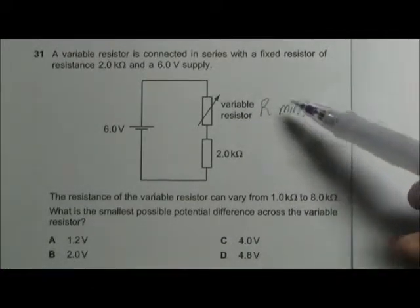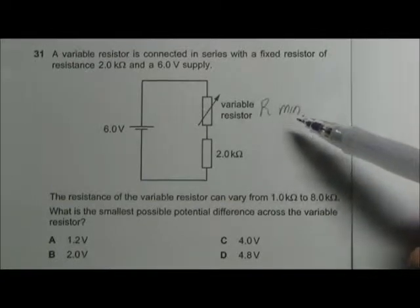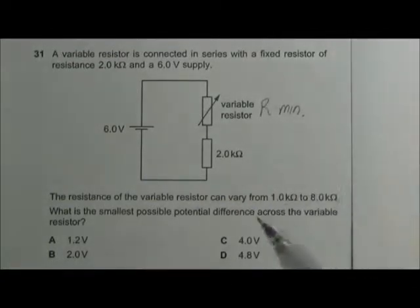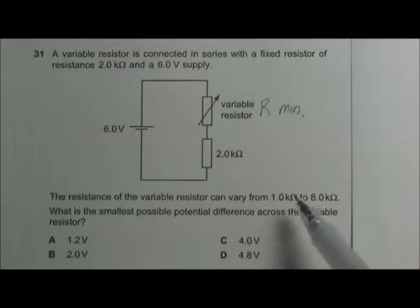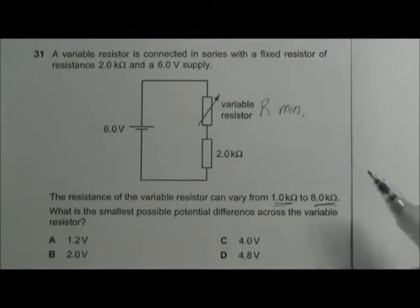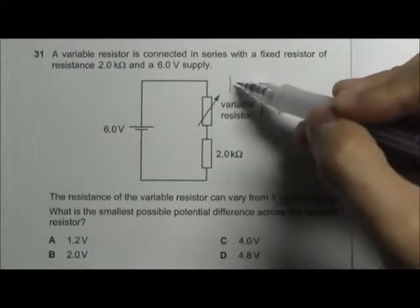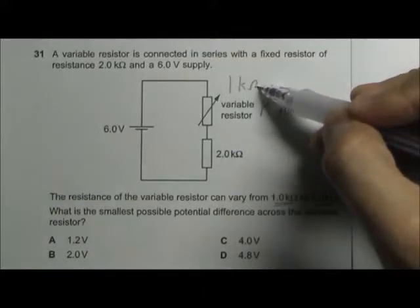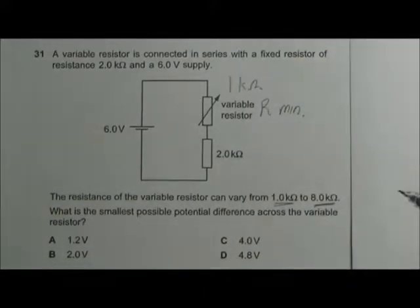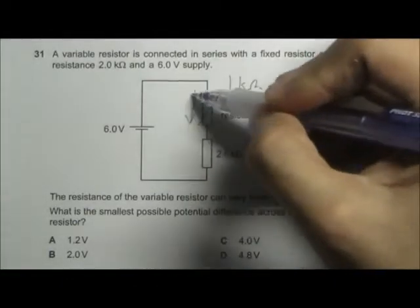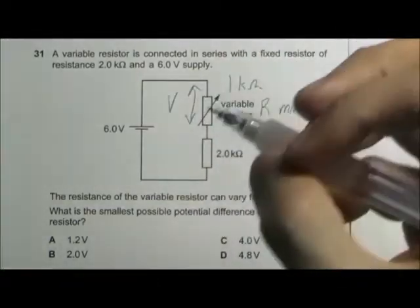The resistance of the variable resistor can vary from 1 kilo-ohm to 8 kilo-ohms. So let the resistance of the variable resistor be the lowest, which is 1 kilo-ohm. Now, what is the smallest possible potential difference across the variable resistor? We can find the answer using V equals R1 over R1 plus R2, multiplied by the total voltage.